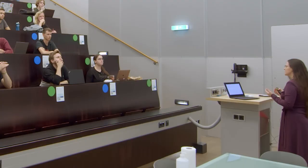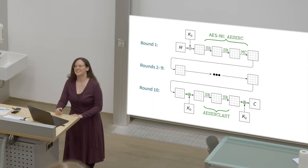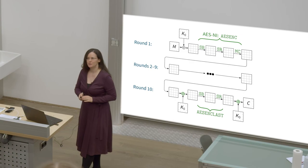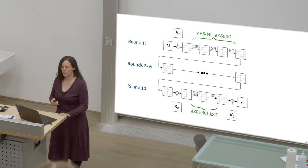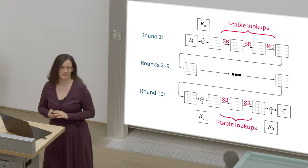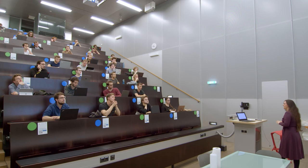But what if my processor doesn't have that? Unfortunately there are some around who don't. In that case, you need a different kind of implementation which has its own downside. One way to still implement the whole function in one go is the so-called T-table implementation, which implements the entire round using only table lookups — no matrix multiplication, nothing. It does all of that with just one table lookup.